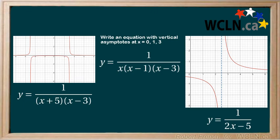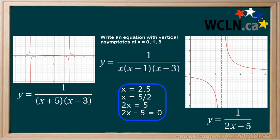A quick refresher. If our asymptote is at x equals 2.5, this is the same as writing 5 over 2, so x equals 5 over 2. Multiply both sides by 2 to get 2x equals 5. Subtract 5 from both sides to get 2x minus 5, which is our factor.